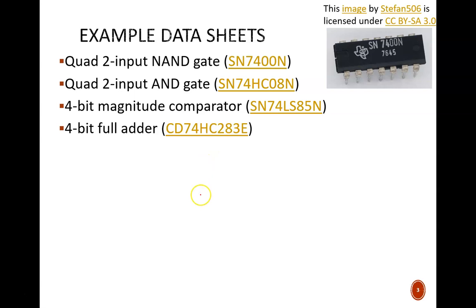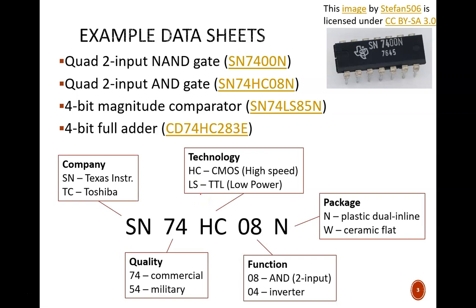The product numbers look overwhelming at first, especially since they are printed so small on the chips. I've split apart the number for the SN74HC08N AND chip to examine its components. Note that in each of these boxes, I only provide two examples of what the codes mean. Most of these components have several possible codes, which you could look up. The first two letters tell us the manufacturer. Texas Instruments is the big player here, but there are other companies like Toshiba. The next two numbers indicate the quality or grade of the IC. We use 74 or commercial grade in class because the environmental conditions are moderate. A 54 or military grade chip uses higher quality materials that can withstand temperature extremes. The next two letters indicate the underlying technology. Two common types are HC for high-speed CMOS chips and LS for TTL low-power chips.